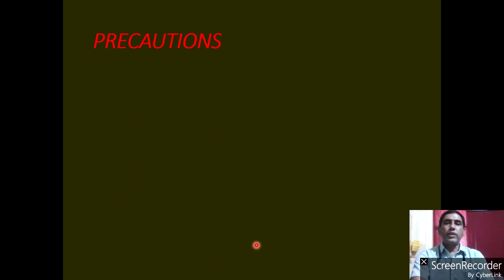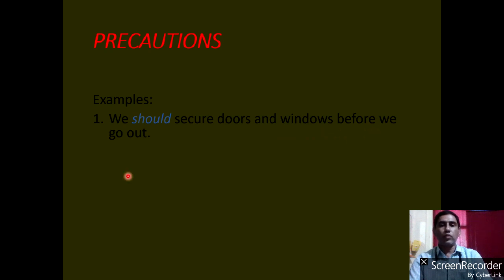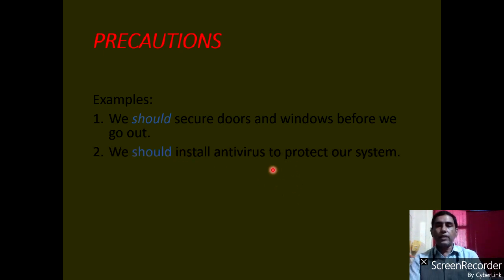Precautions — in which precautions do we use should? Let us see. Let me give some examples. We should secure doors and windows before we go out. If you are going to a picture with your family members, you should secure your doors and windows. We should install antivirus to protect our system or laptop. Presently, I have bought a laptop and installed it.